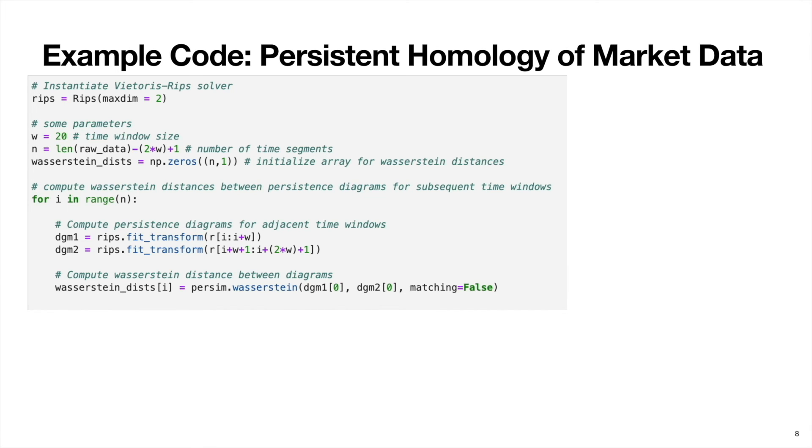Next, we define the total number of these chunks we will have. And finally, we create a NumPy array to keep track of a number that quantifies changes in homology. Okay, next, we go down to this for loop and we do some persistent homology.